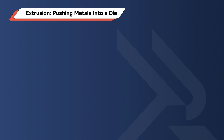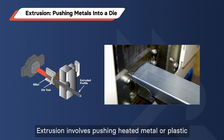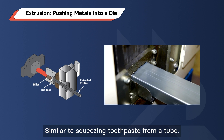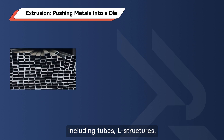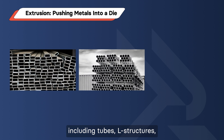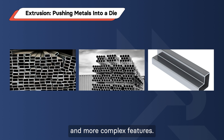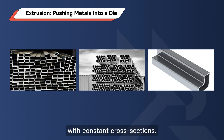Extrusion – Pushing Metals into a Die. Extrusion involves pushing heated metal or plastic through a die, similar to squeezing toothpaste from a tube. The die shapes the material into various forms, including tubes, L-structures, and more complex features. It's ideal for producing high volumes of parts with constant cross-sections.